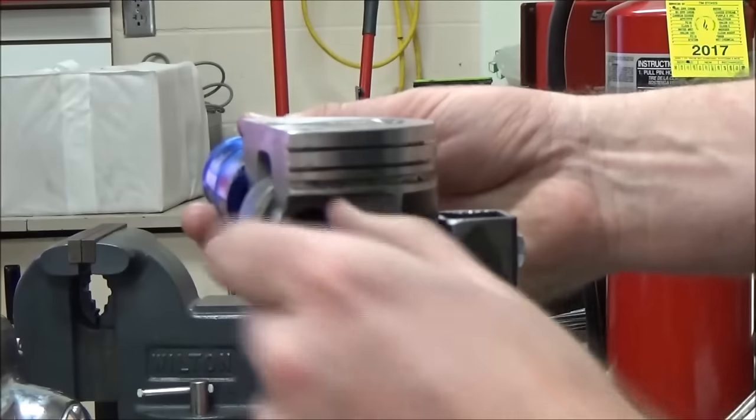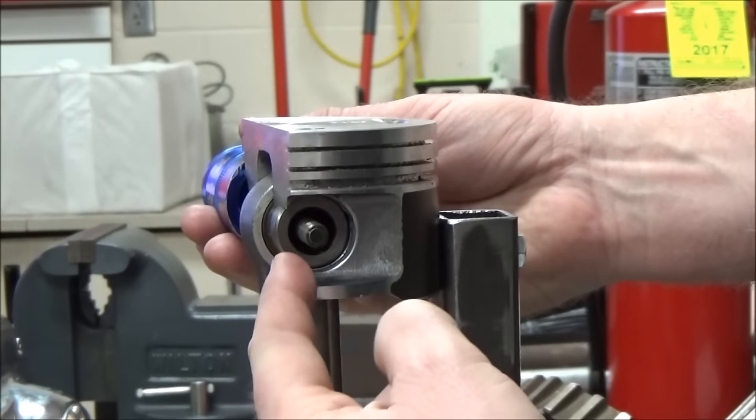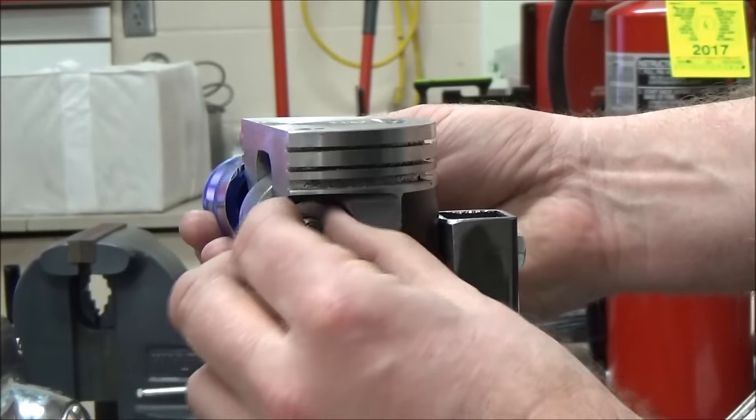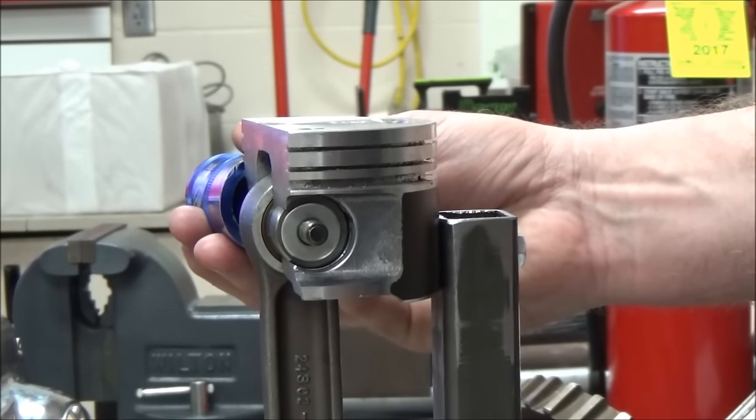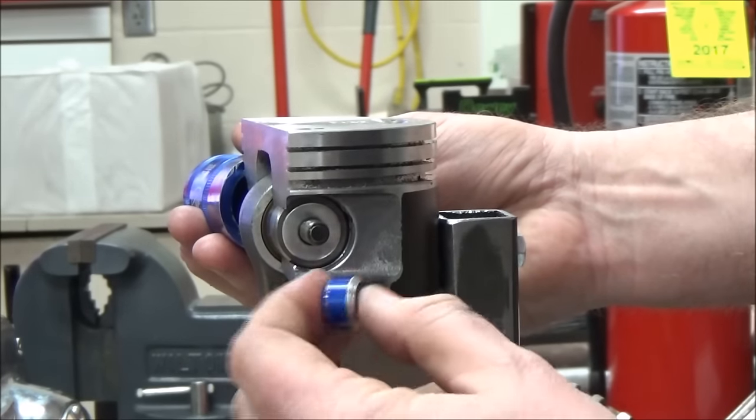I just need it sticking through far enough to be able to thread it in flush against that pin. So I'm going to put on my selected washer. Once again, it does not come with it - it's something that I add. This is left-handed thread.